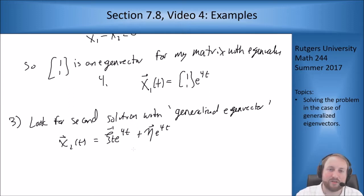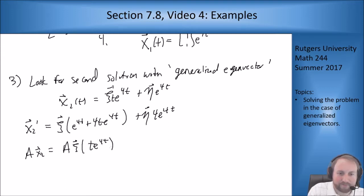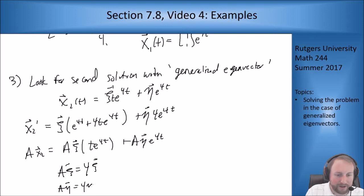I plug this into both sides of my equation. Technically you don't have to do all this because you know what the answer will look like, but I'll do it all to show where the equations come from. x₂' = ξ(e^(4t) + 4te^(4t)) + η(4e^(4t)). And Ax₂ = Aξte^(4t) + Aηe^(4t). Matching up terms, we need Aξ = 4ξ and Aη = 4η + ξ.